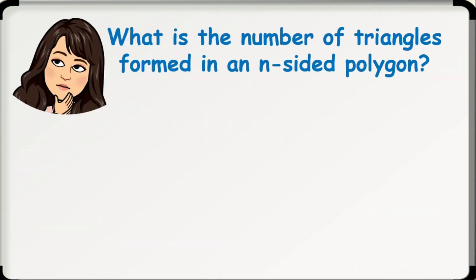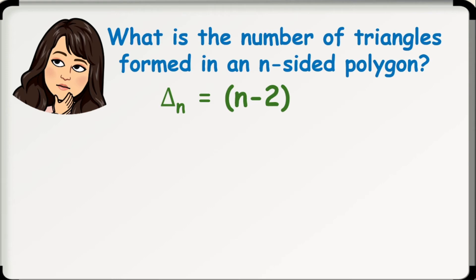The first question is: what is the number of triangles formed in an n-sided polygon? As observed from the table, the number of triangles formed is 2 less than the number of sides of a polygon. Hence, there are n-2 triangles formed in an n-sided polygon. Our formula is: number of triangles is equal to n-2, where n is the number of sides of the given polygon.